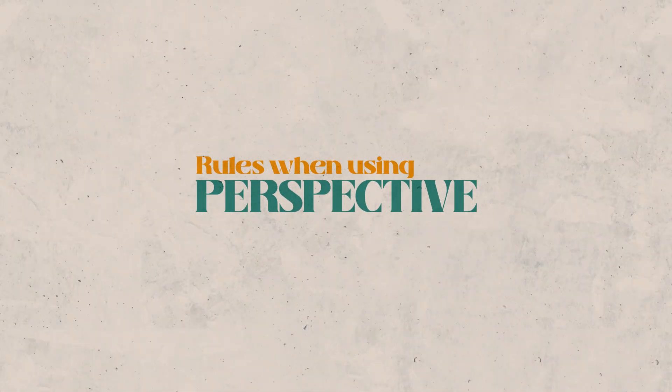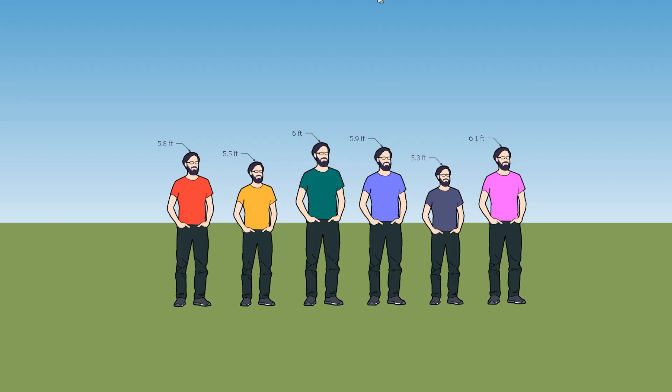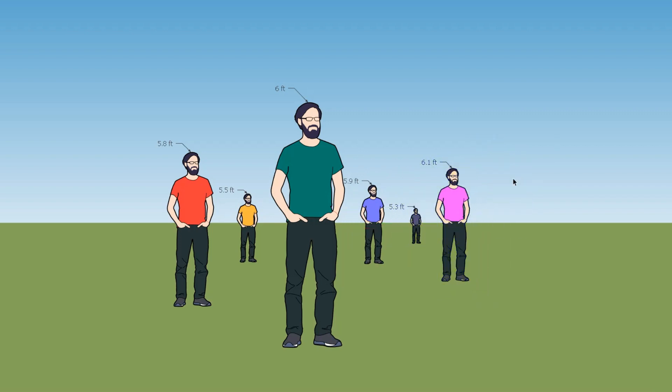Today we're going to talk about the rules when using perspective. The first rule is this: when something is further away, it gets smaller and closer to the eye level. I have some models here with different heights, but this rule will also apply even if they have similar heights. I'm going to move them away from each other, and as we can see, the first rule is starting to make sense. The model gets smaller when I move it further away, and as they get smaller, the level of their head and their feet are closer to the eye level.